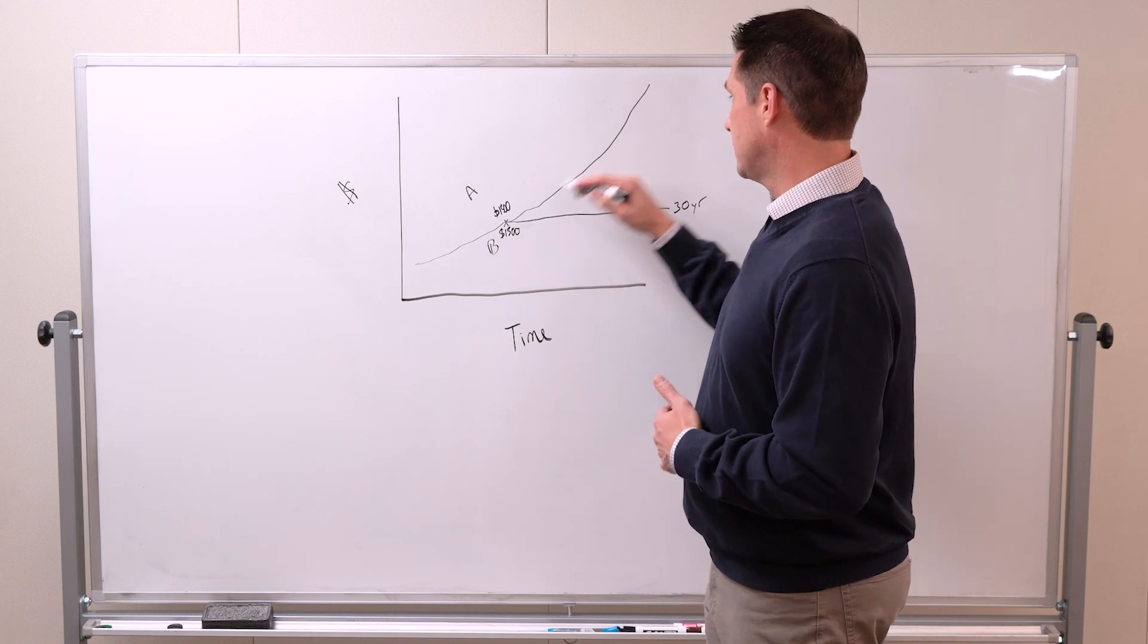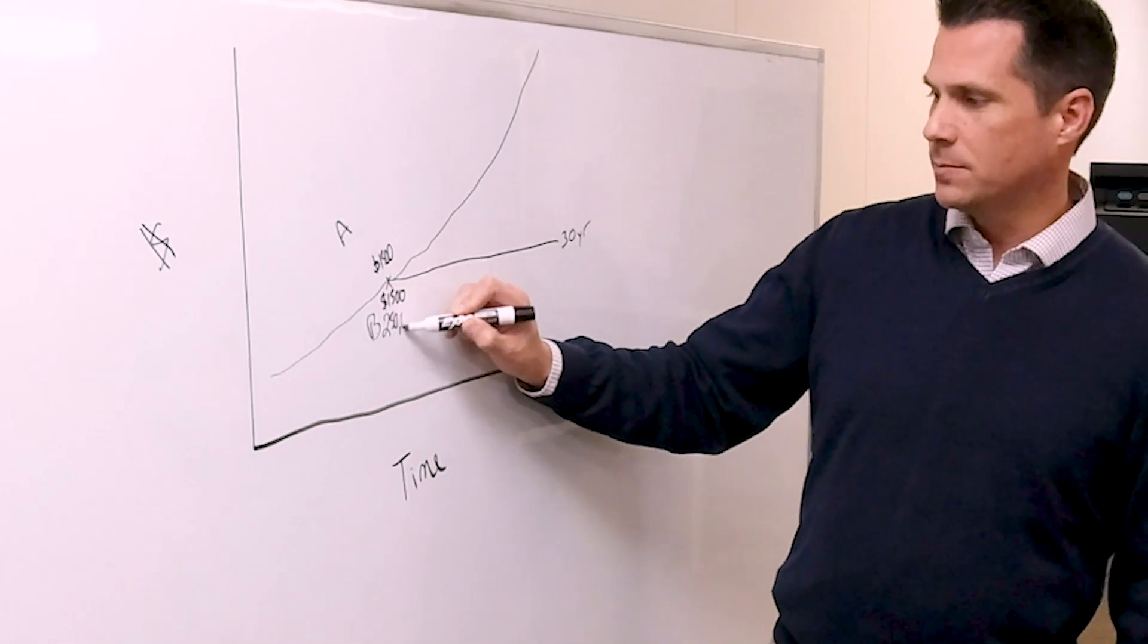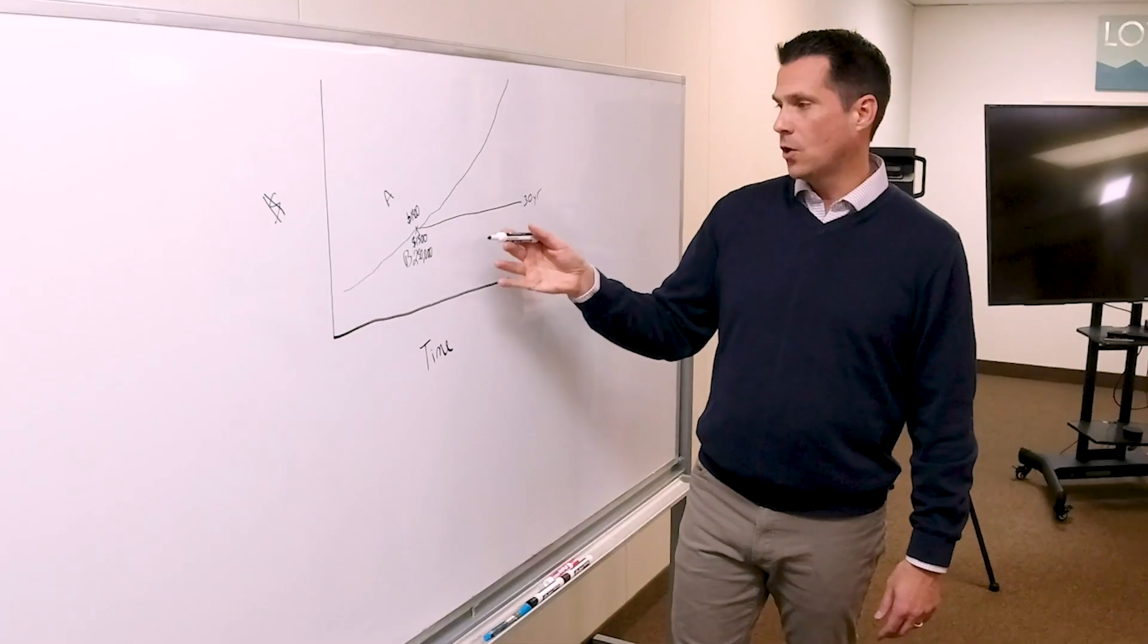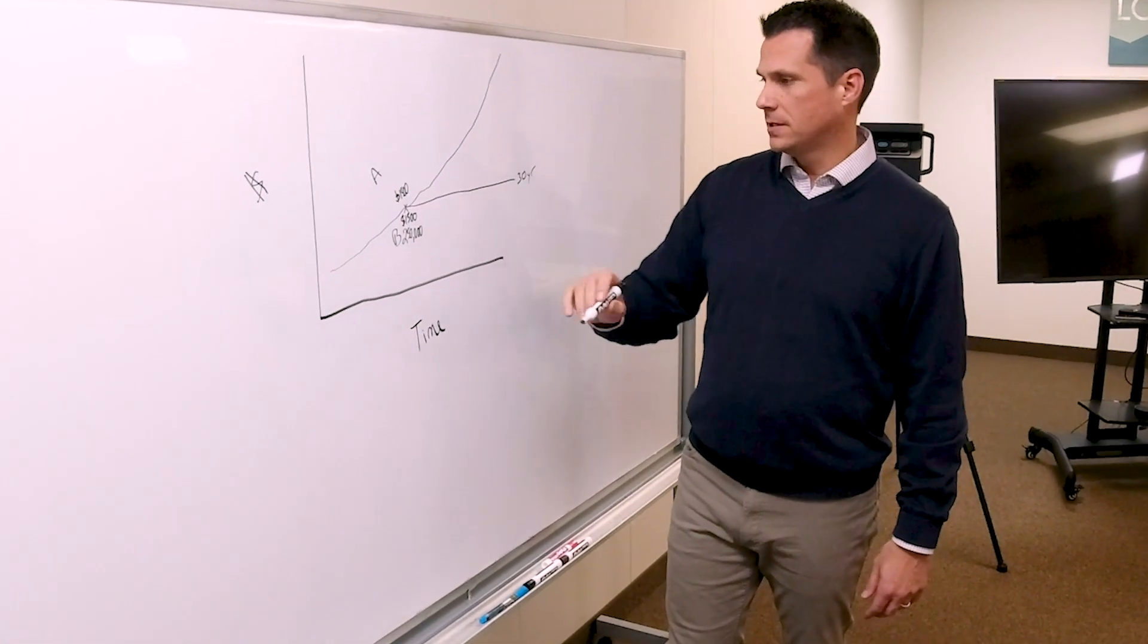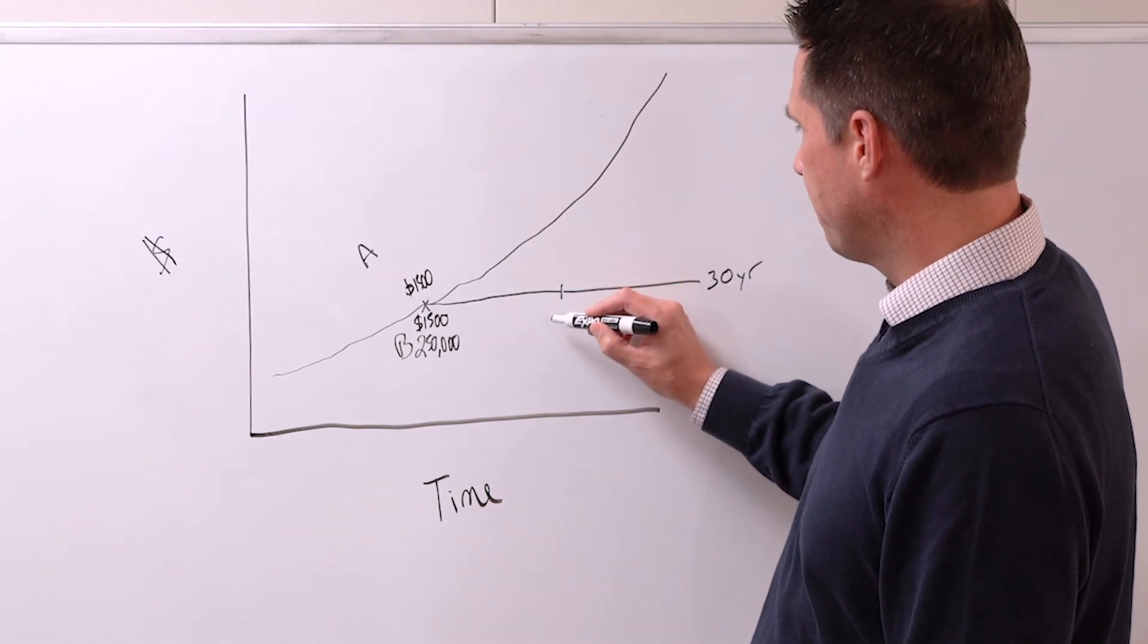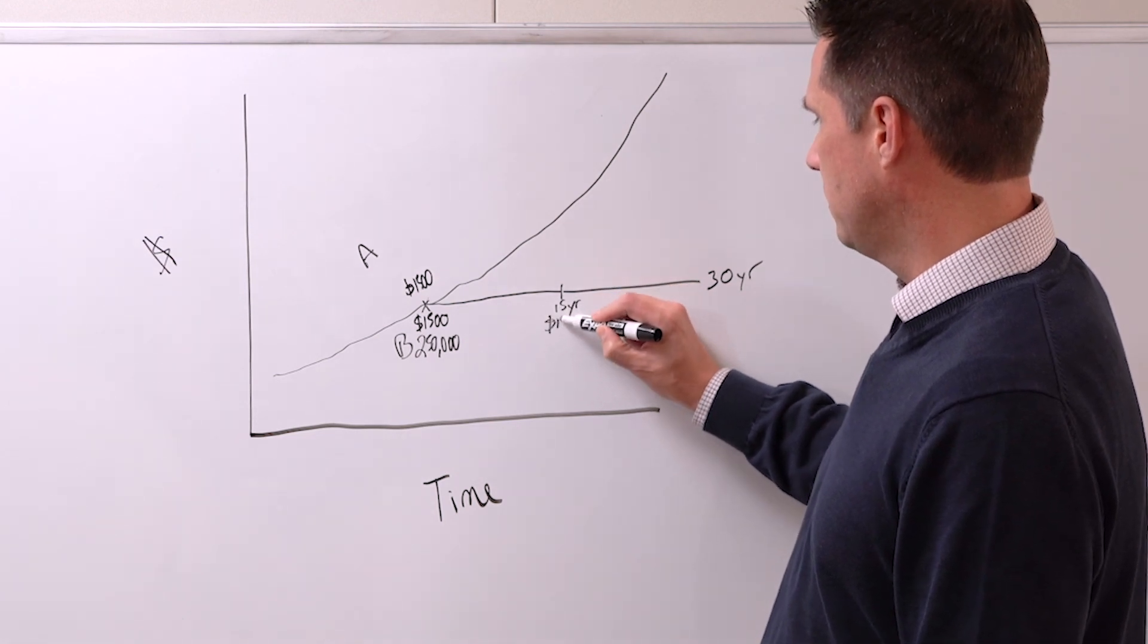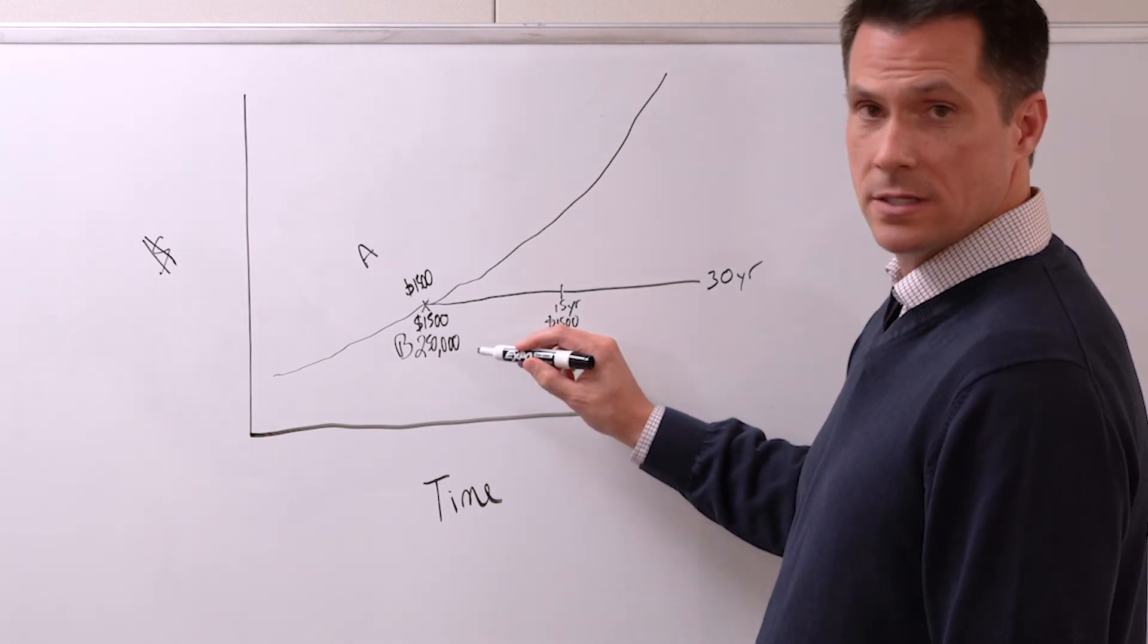I didn't do any of these numbers precisely, but I'm just trying to prove a point of the value of owning. If he bought something for $250,000 and he's paying $1,500—what's really compelling is that in 15 years he's still paying $1,500. But what's his house worth? Wait a minute, it's not $250,000—it's $500,000.